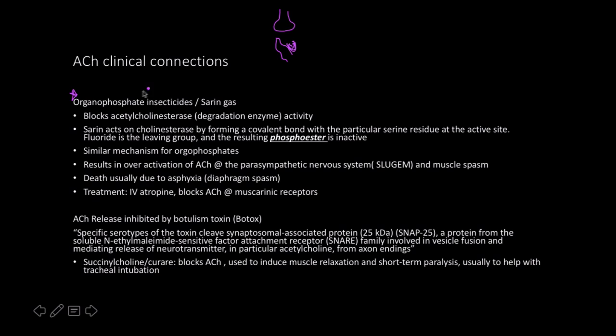If you're poisoned by sarin gas or organophosphate insecticides, your acetylcholinesterase is blocked, resulting in a large accumulation of acetylcholine at the dendrite. Sarin gas is such a good inhibitor because it forms a strong covalent phosphodiester bond to the enzyme, so the enzyme can't do its job. The result is an enormous amount of acetylcholine throughout the body — at the neuromuscular junction causing muscle spasms, and an overstimulation of the parasympathetic nervous system.